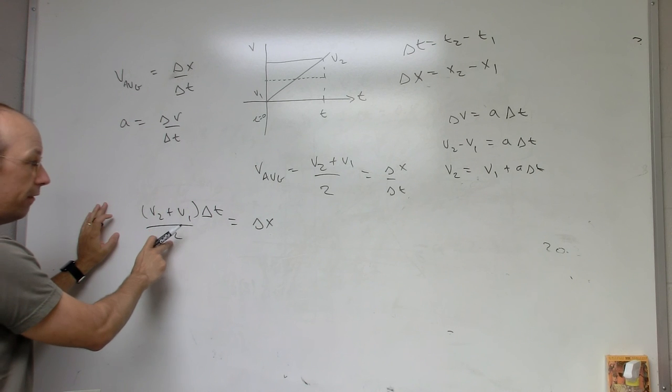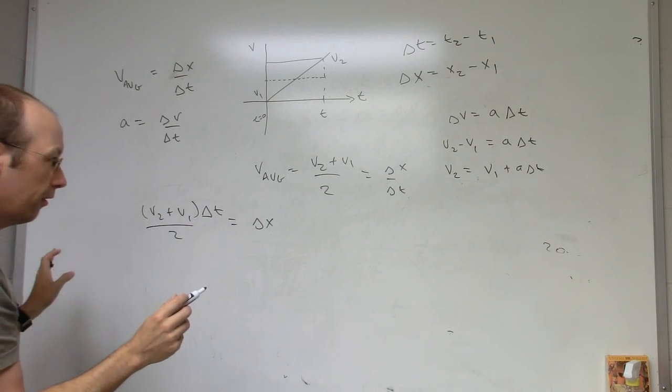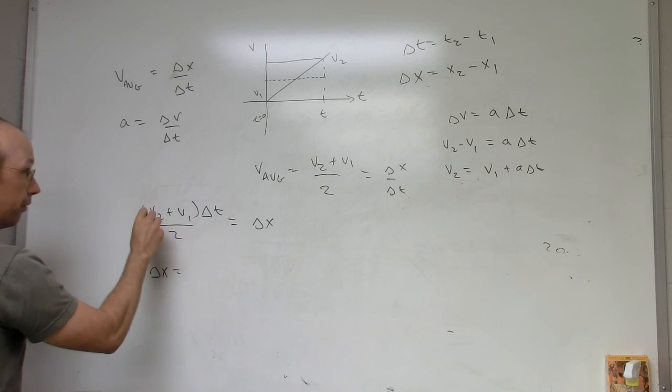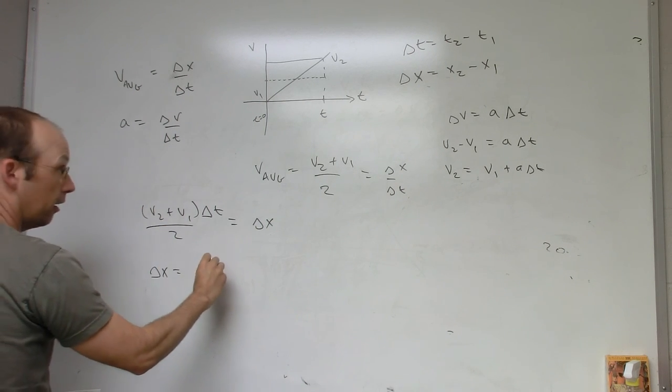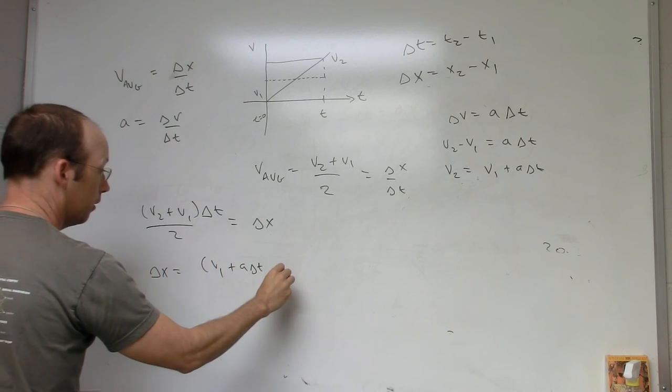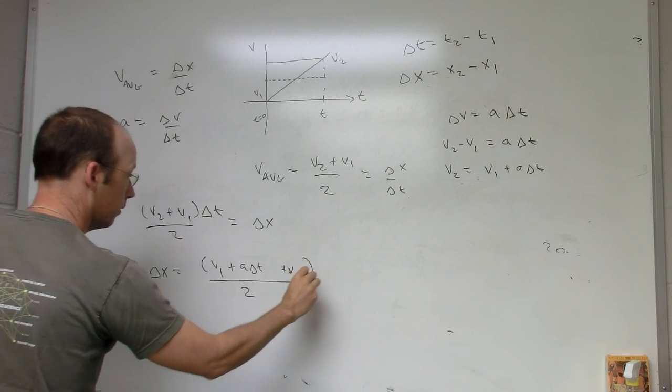Okay, so I still have that 2 over here. So let's just, it looks a little messy, but I'll write it out. Delta x equals v2, which is going to be v1 plus a delta t plus v1. All of that over 2, delta t.